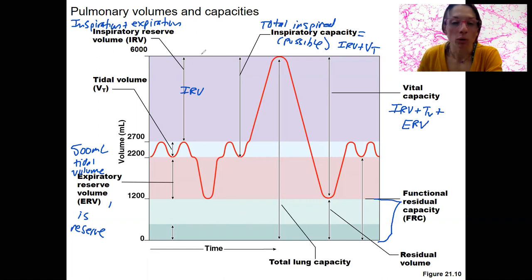The total lung capacity is all of these added together. That is an amount you never actually can breathe in and out without your lungs collapsing. But it is literally the volume that your lungs could potentially inhale and exhale.